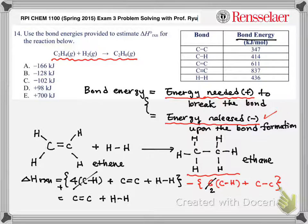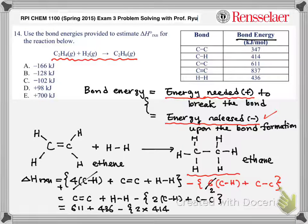It is C=C double bond, bond energy plus H-H bond energy minus 2 C-H bond energy plus C-C bond energy. Now I'll plug in those numbers: 636 minus 2 times 414 plus 347, and I will get -128 kilojoules for that reaction. Therefore, the answer is B.